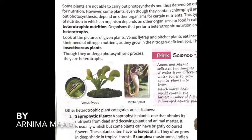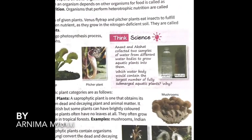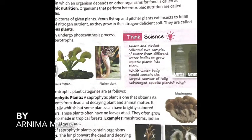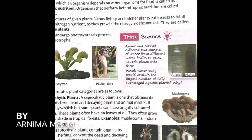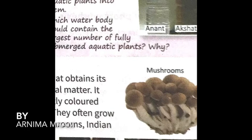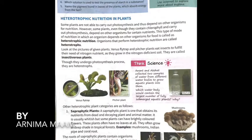Now, another category of heterotrophic plants is saprophytic plants. A saprophytic plant is one that obtains its nutrition from dead and decaying plant and animal matter. For example, mushroom — naturally, mushroom grows in dirty or stagnant places where dead or decaying matters are present, such as stagnant water where algae and fungi accumulate.